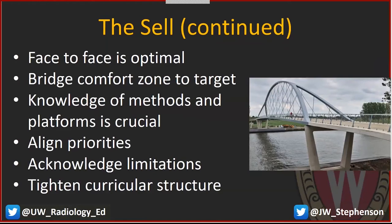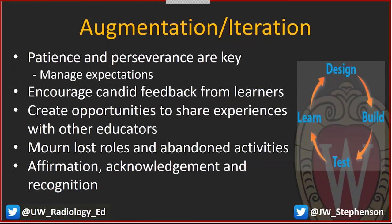The last step is augmentation and iteration. As with the other steps, patience and perseverance are very important here. We want to get the learning activity into existence and recognize that is not the end of the story — augmentation and iteration happens after the activity has deployed for the first time. Managing expectations is a really important part of that process. Help faculty understand, before they've really started to develop that activity, that it may take three or four iterations before some sort of comfort level is achieved and before major flaws are revealed and the activity really takes on a more mature form. That should be expected.